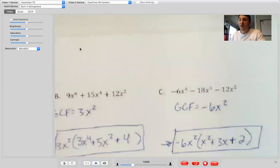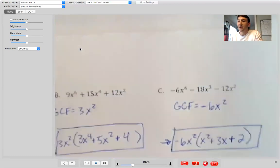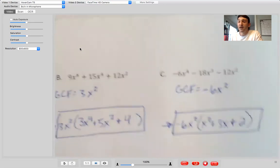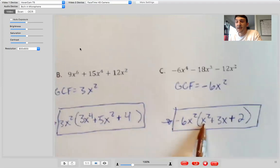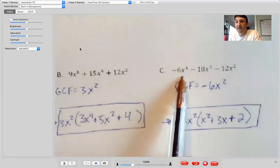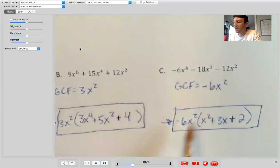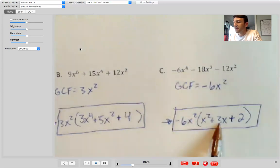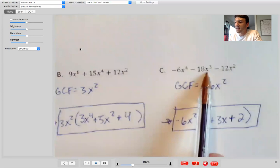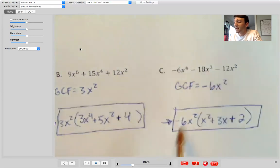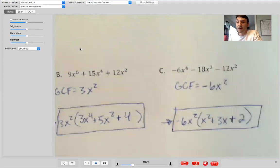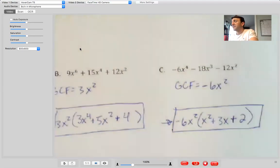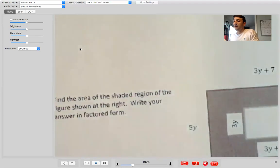And then it's probably worth noting that, you know, I can always check my answer whether this is a mental math step or actually write it out by just multiplying them out. Right. So negative six X squared times X squared is going to be negative six X to the fourth. Good. Negative six X squared times three X is going to be negative 18 X to the third. Good. Negative six X squared times two is going to be negative 12 X squared. So you can see it would multiply out correctly.